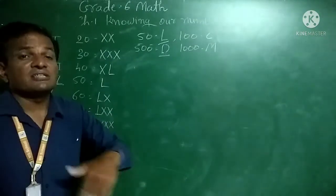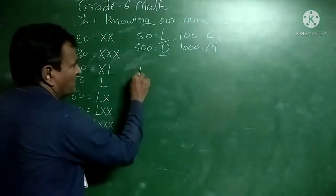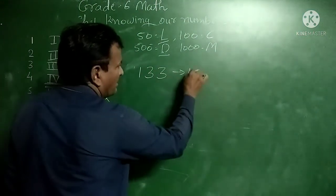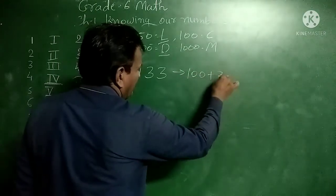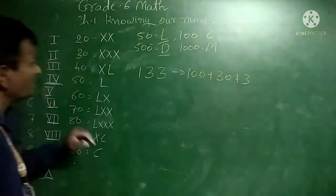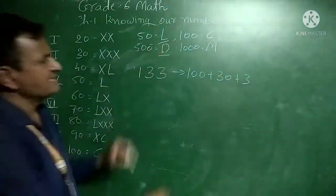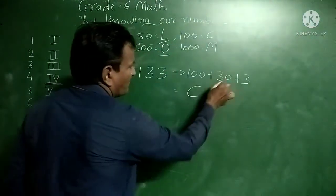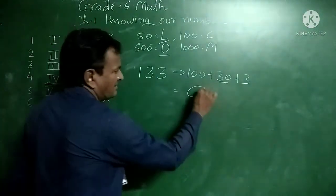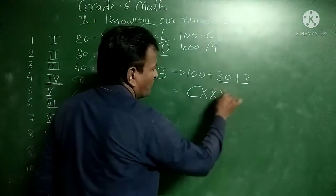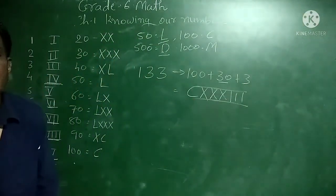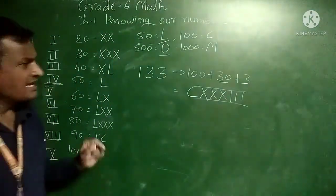Next, suppose we write the greater number 133. We write 133 as 100 plus 30 plus 3. The symbol for 100 is C. For 30 we write XXX (three X's). For 3 we write III. So 133 in Roman numerals is CXXXIII.